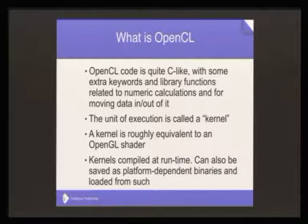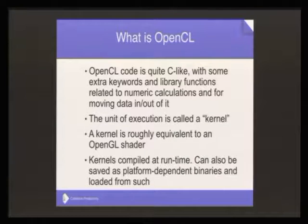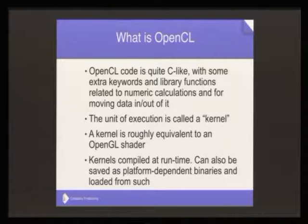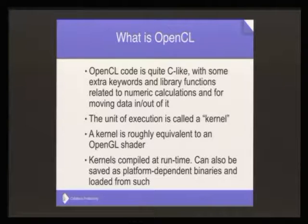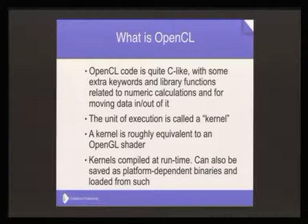Just like OpenGL shaders, OpenCL kernels are compiled at runtime. You have the OpenCL source code inside your C++ or C program as a string, in a file, or you construct it at runtime, and then you compile it into platform-specific code and execute it. You can also save these binaries in a file — and we actually do that for our OpenCL code.